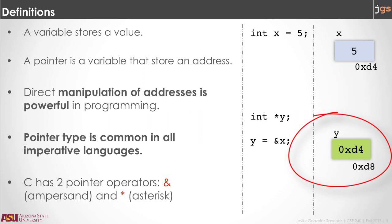Y is a variable. Therefore, it has an address 0xd8 — the particular address of this green box in the memory of your computer. Inside the variable you store a value, and that particular value happens to be an address. Y is called a pointer, and in particular, in this scenario, y is pointing to x.